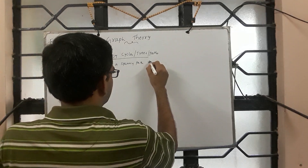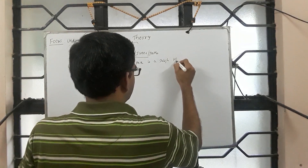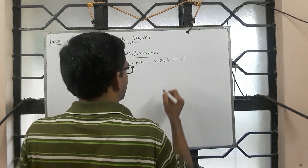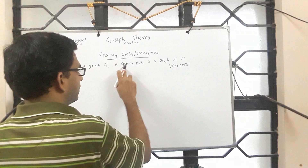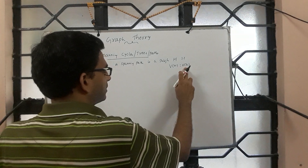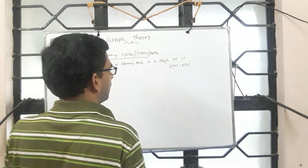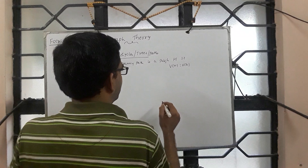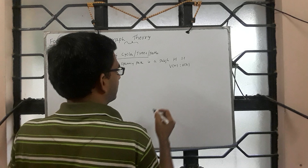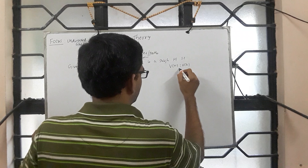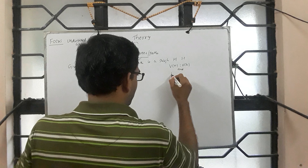A spanning path is a subgraph H such that V of H is the same as V of G — it is spanning, which means the vertex set of H and G are one and the same. So all of V of G is present in H, and additionally H is a path.